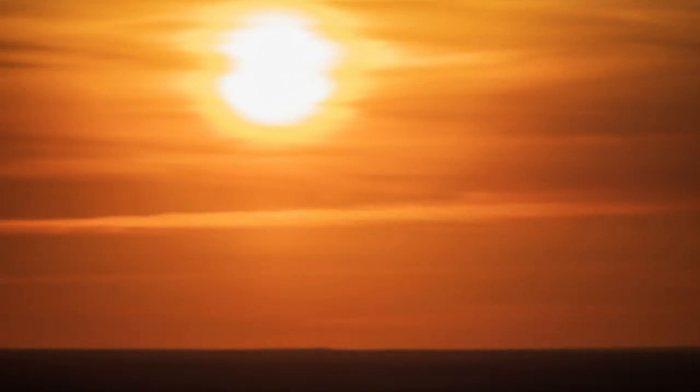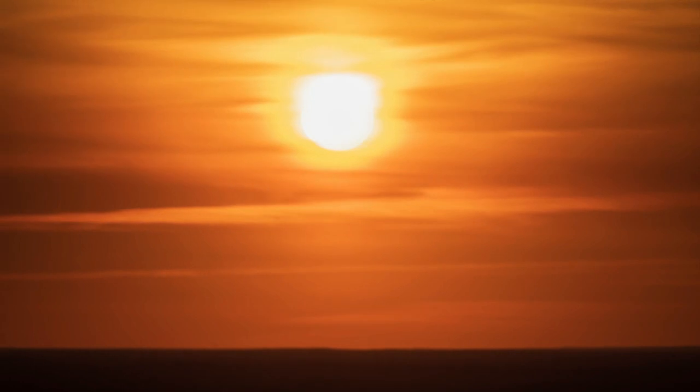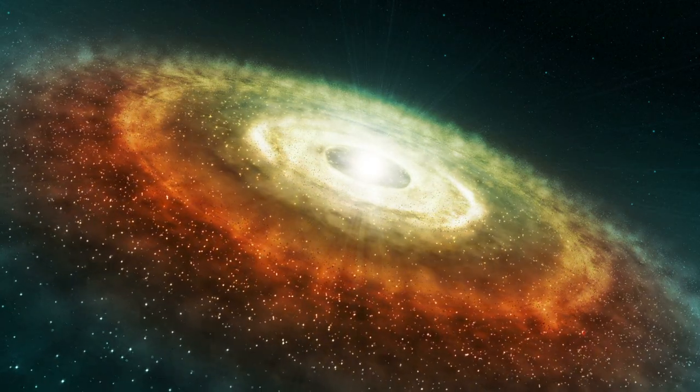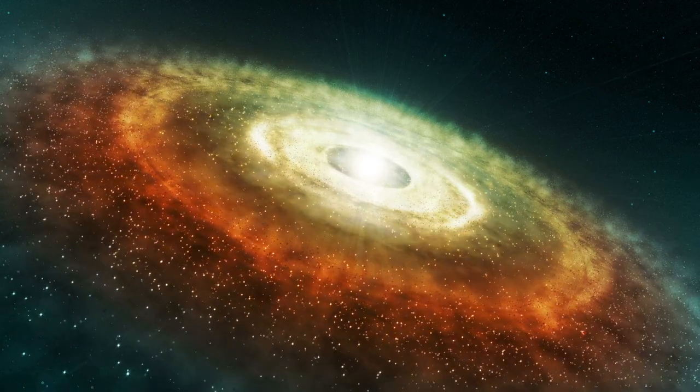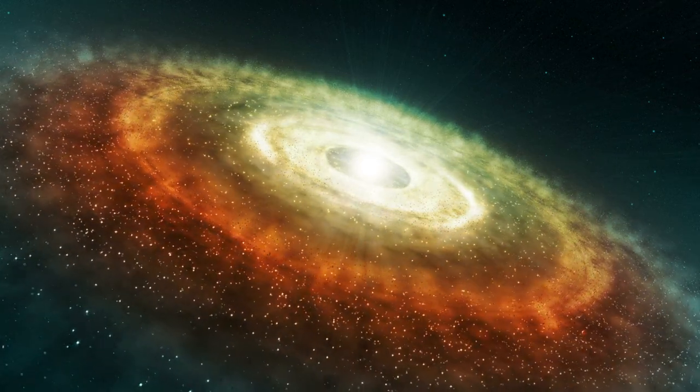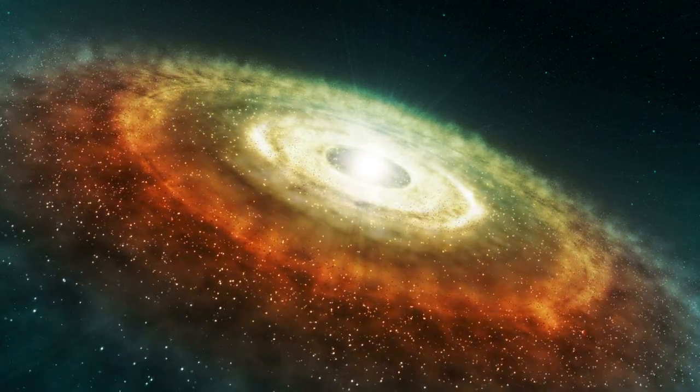The sun travels at 220 kilometers per second. The sun is 24,000 light-years from the galactic center. It takes the sun 250 million years to complete an orbit of the center of the Milky Way.